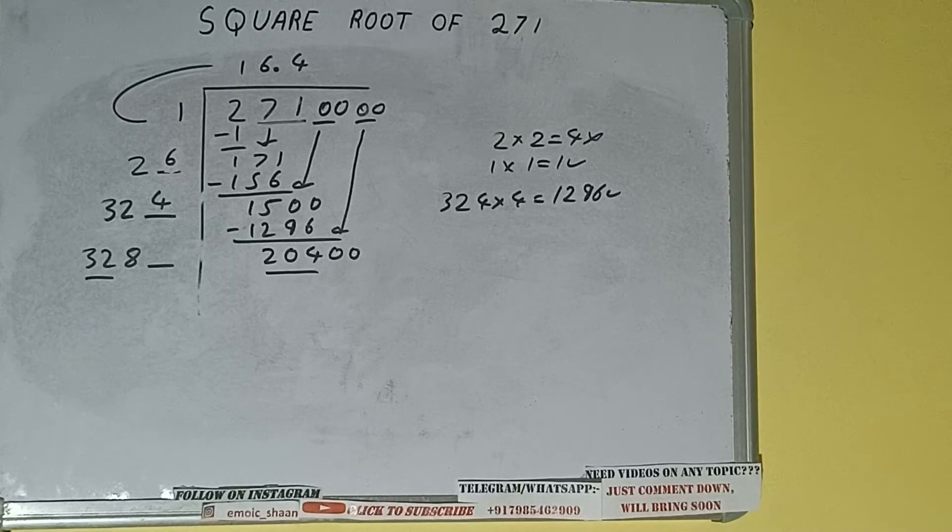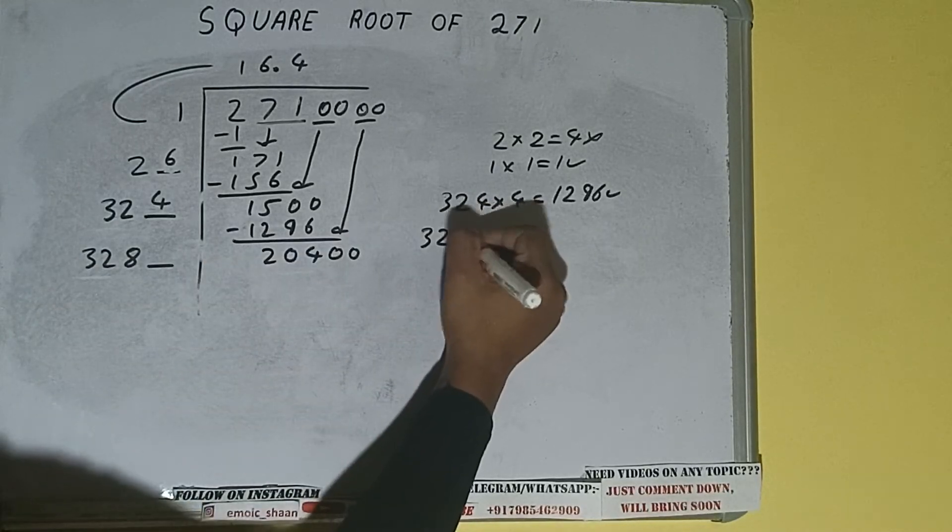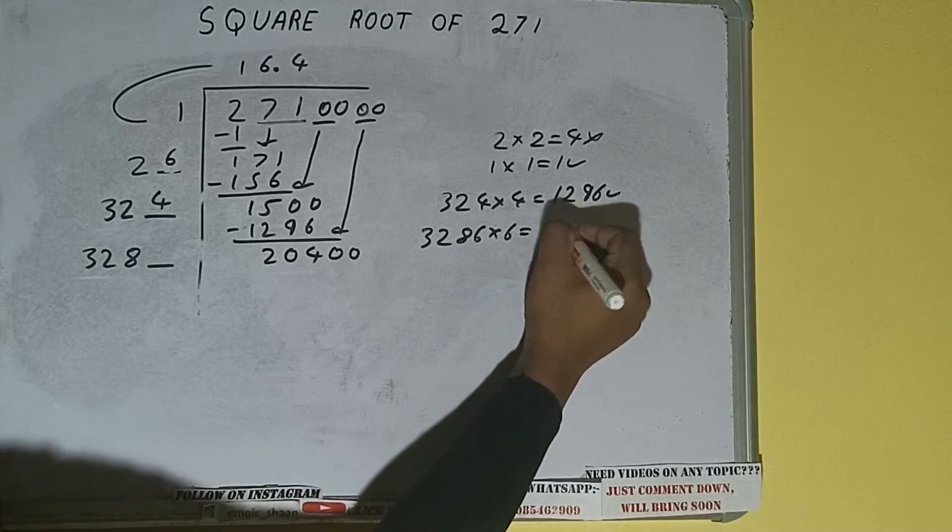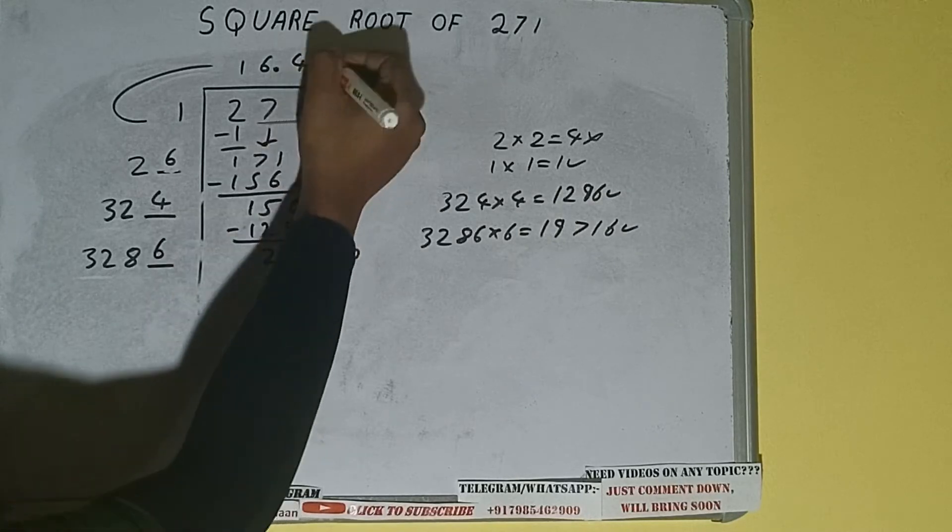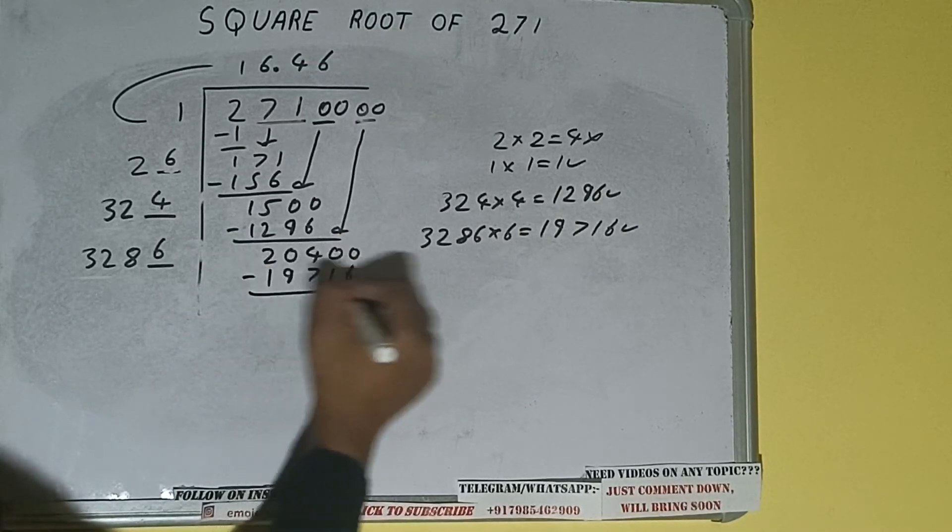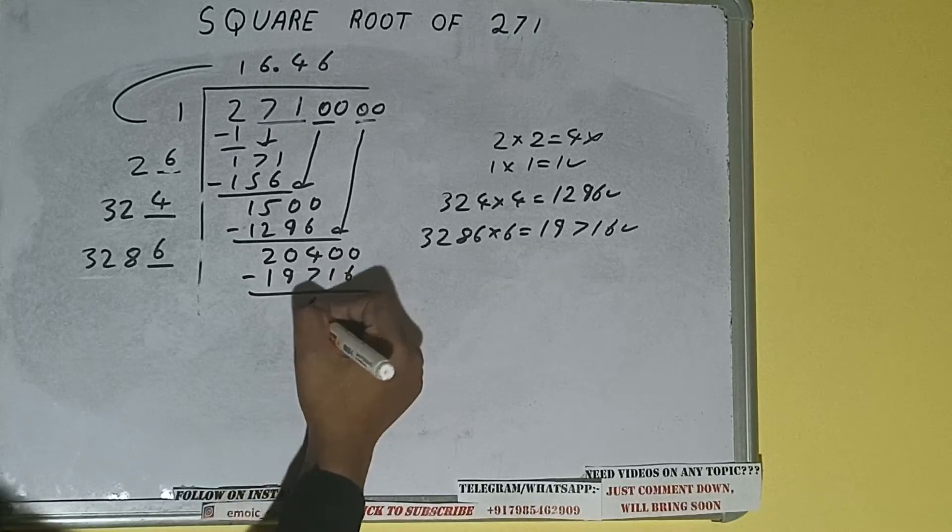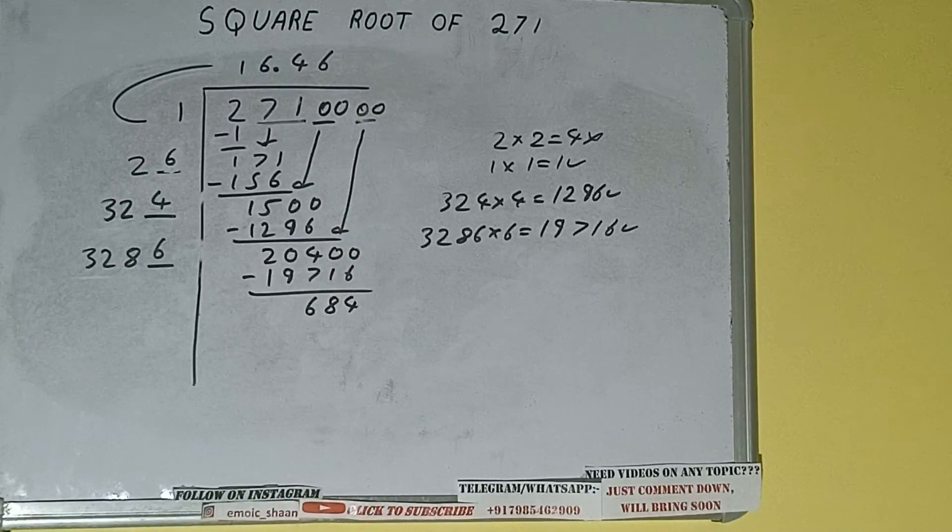Now compare this 32 with this 204. So 32 six times is 192, so we can try 6 times. 3286 into 6 we can try, and it will be 19716, which is good to take. So 6 here and 6 here, 19716 subtract and we'll be left with 684.